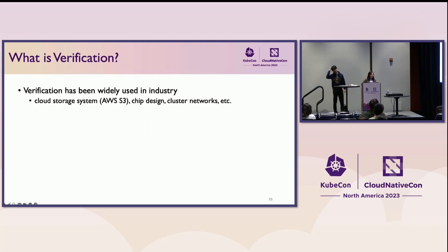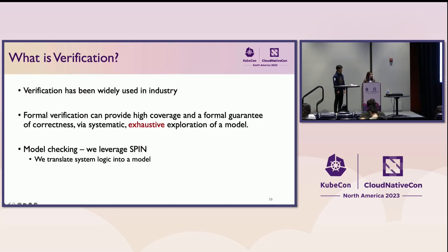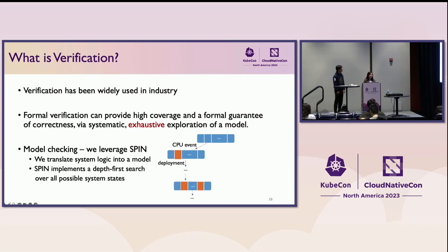You may ask: what is verification? Verification has been widely used in industry, including cloud storage systems like Amazon AWS S3, chip design, and cluster networks. Formal verification can provide high coverage and a formal guarantee of correctness by exhaustively exploring a model. We leverage model checking and in particular SPIN, which is a mature tool that has existed for over 20 years. We translate system logic into a model, and SPIN performs a DFS search over all possible system states caused by different actions, exploring all possible interleavings until we find violations or prove everything is correct.